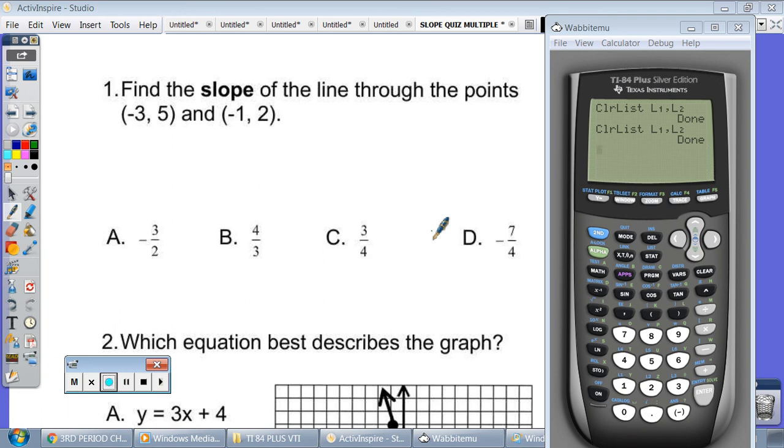So you could use y2 minus y1 divided by x2 minus x1, or you could actually plot these points on a coordinate grid and do rise over run to the right, or fall over run to the right.